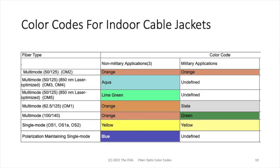Outside plant cables are usually black for UV resistance, but indoor cables are PVC jacketed, and they are color coded to tell you what kind of fiber is in the cable. For example, orange is typically multimode, and yellow is typically single mode. But over the last few years, we've added aqua for multimode laser-optimized 50/125 fiber, and lime green for laser-optimized wideband fiber, and another one which is a dark blue, which is polarization-maintaining single mode fiber.